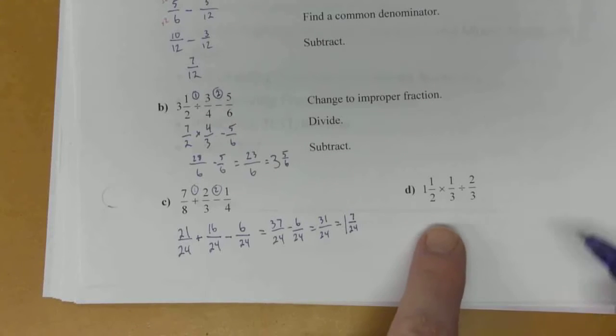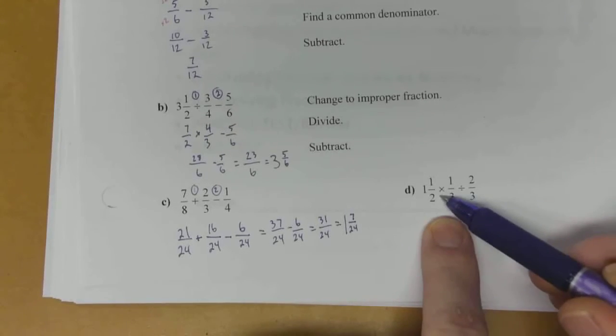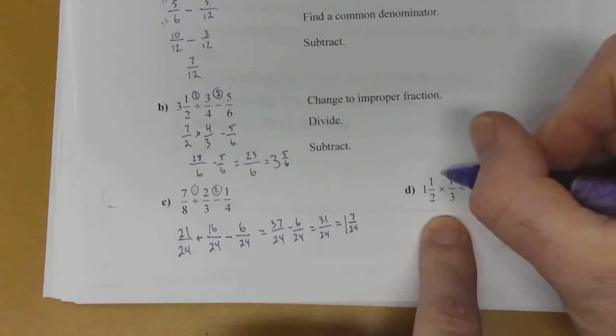One last example of BEDMAS right here. We've got multiply and divide. They are done at the same level in BEDMAS. But again, left to right. So we'll start with the multiply and then we'll do the divide last.